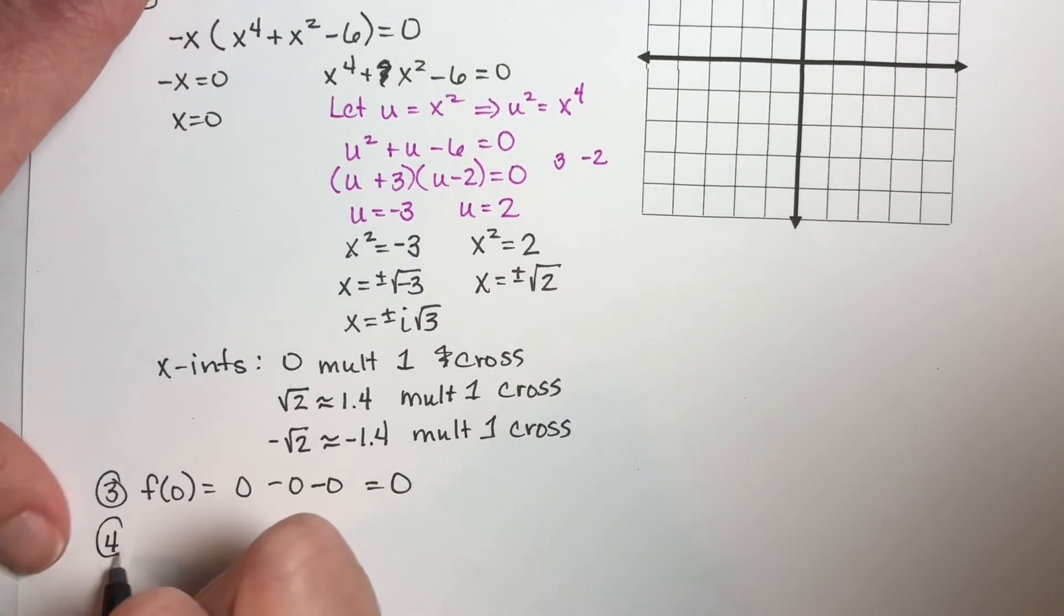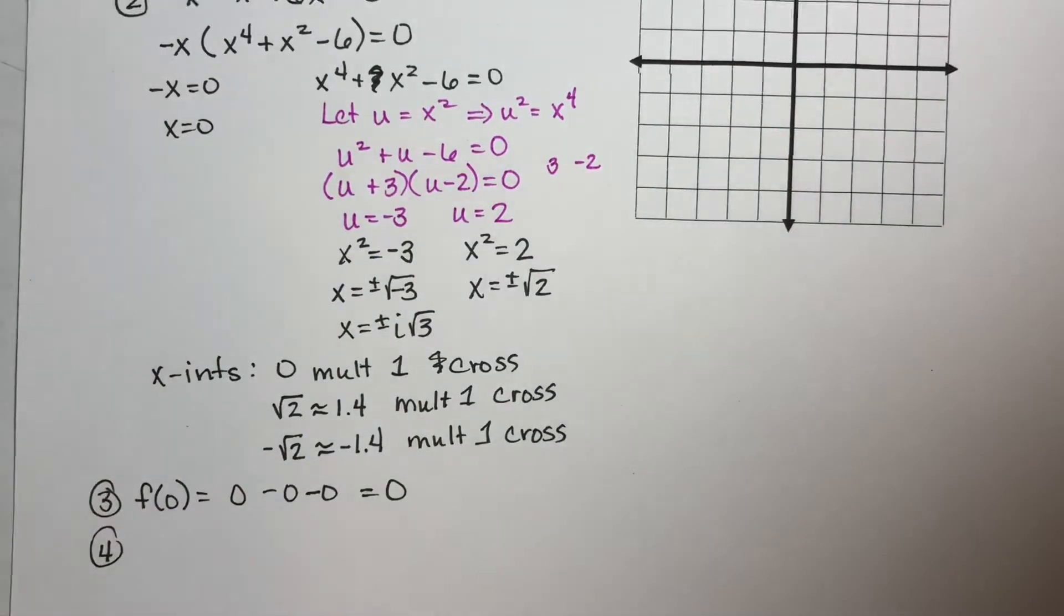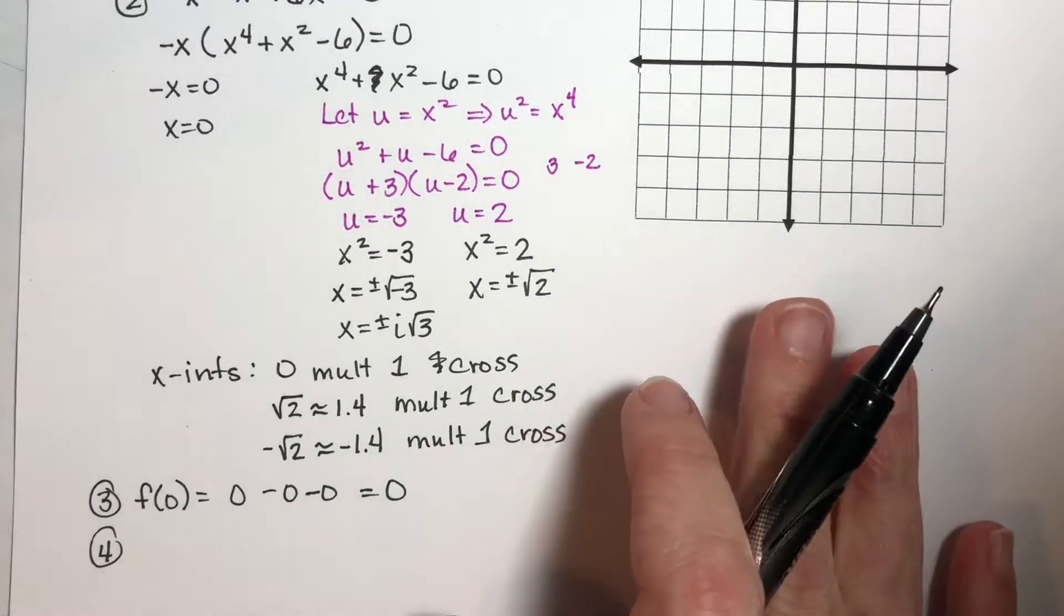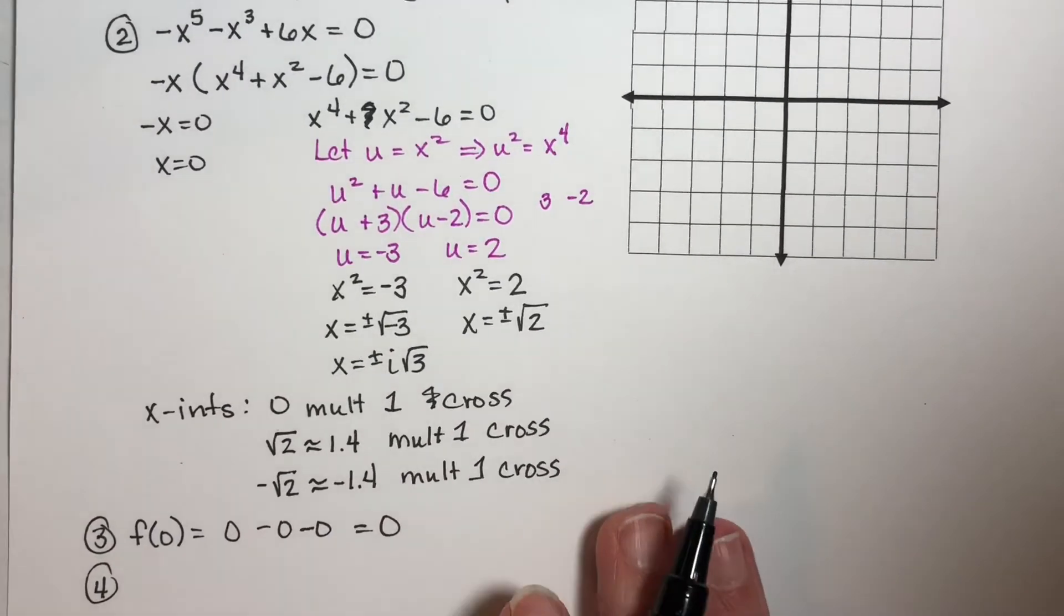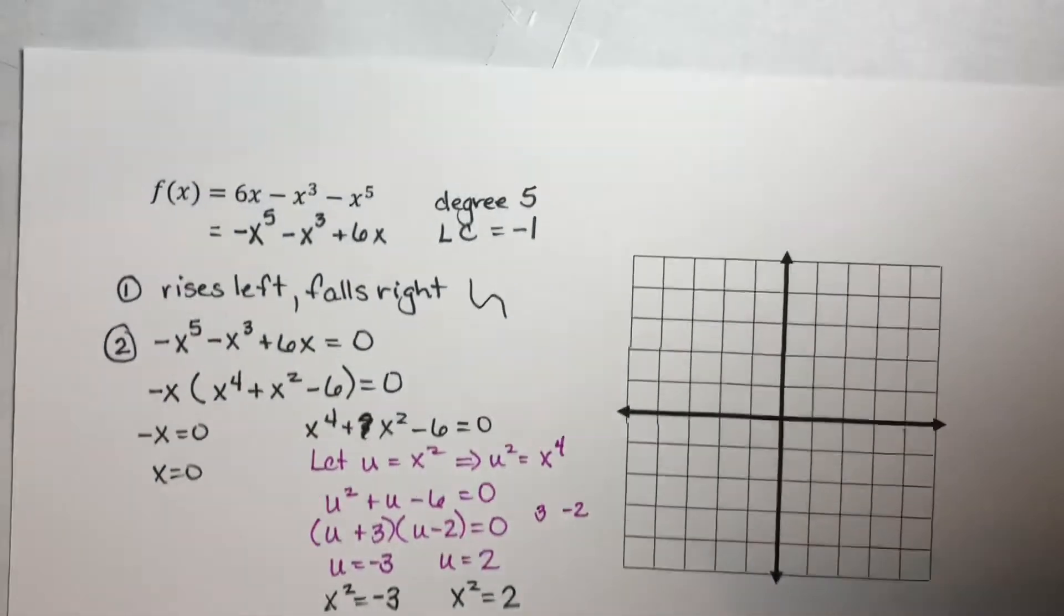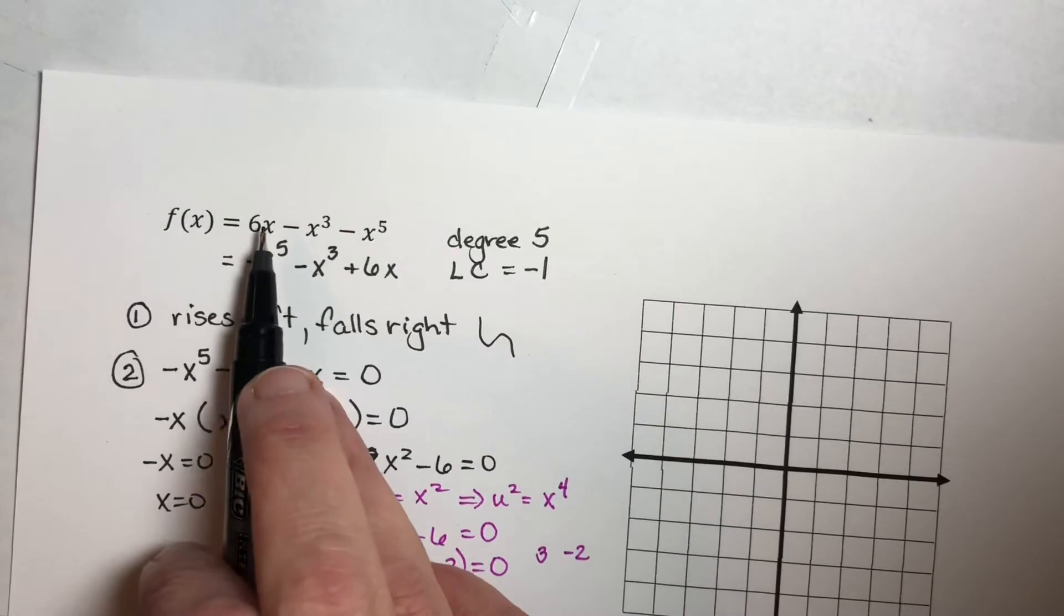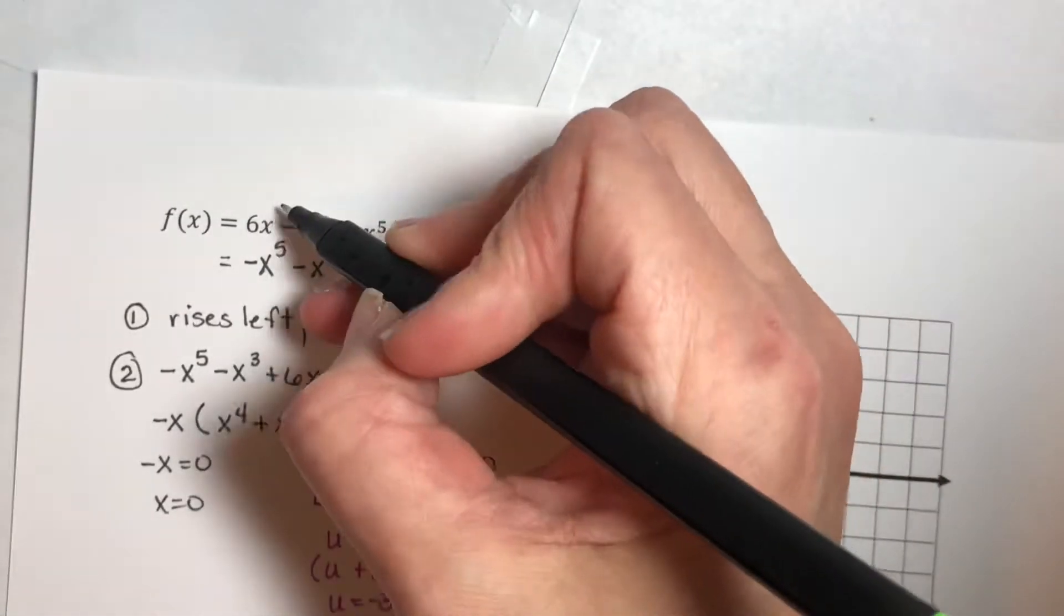Part four is to find symmetry if we have it. So we're looking for even, odd, or neither. And when you have a polynomial, you can just look at your exponents. Let's look at our exponents here. The understood exponent on that is a one.